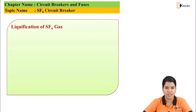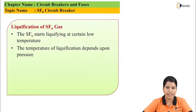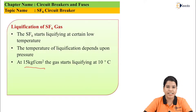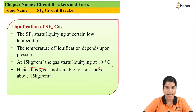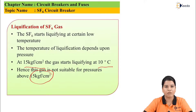The next property is liquefaction of SF6 gas. SF6 gas starts liquefying at a certain temperature, and the temperature of liquefaction depends upon the pressure. At a low temperature, SF6 gas starts liquefying. At a pressure of 15 kgf per centimetre square, the liquefaction process starts at 10 degrees centigrade. As a result, this gas is not suitable at a pressure of 15 kgf per centimetre square and above.